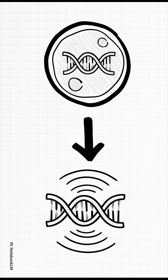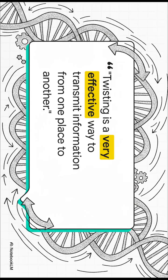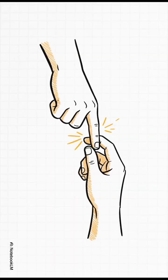But get this: this coiling isn't just about saving space. It's so much more. It's actually a way for genes to communicate, a physical signal that travels instantly. It's kind of like someone twisting your finger to get your attention. You feel it instantly, right?